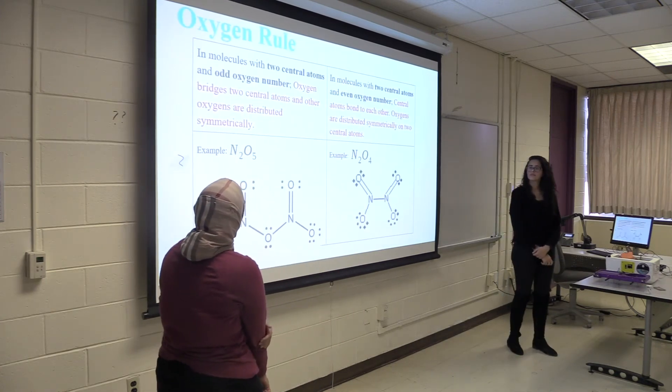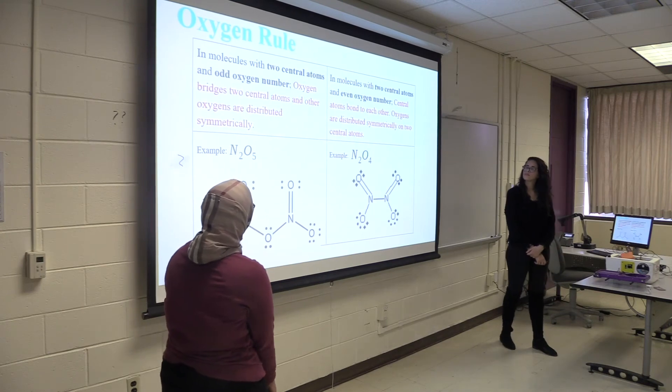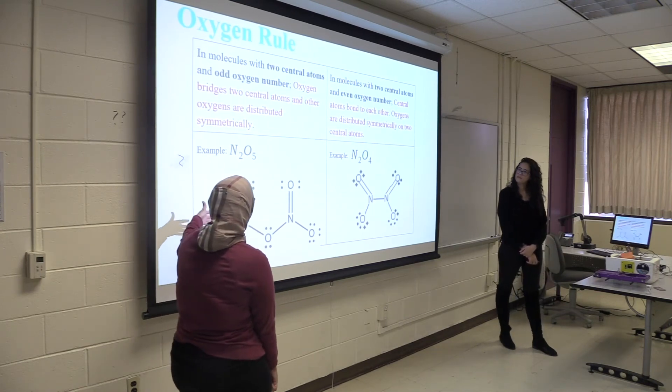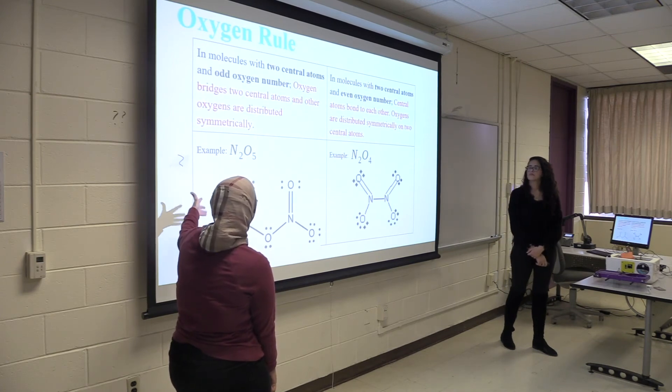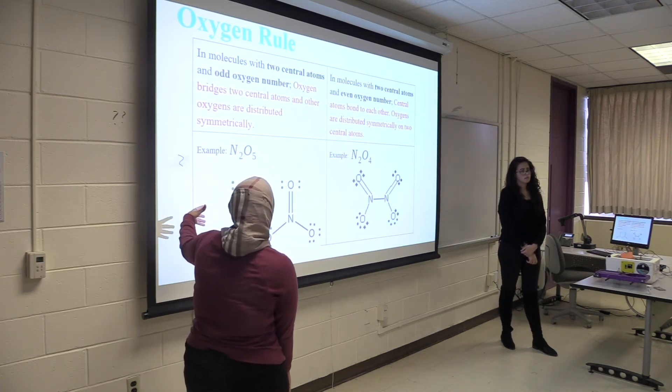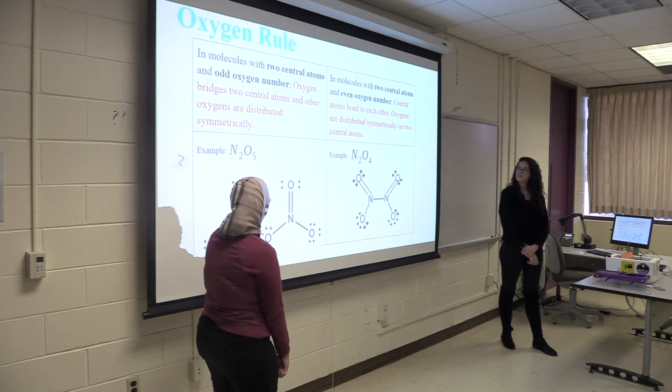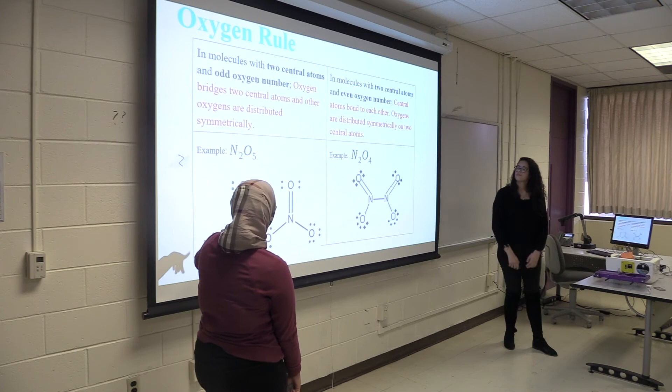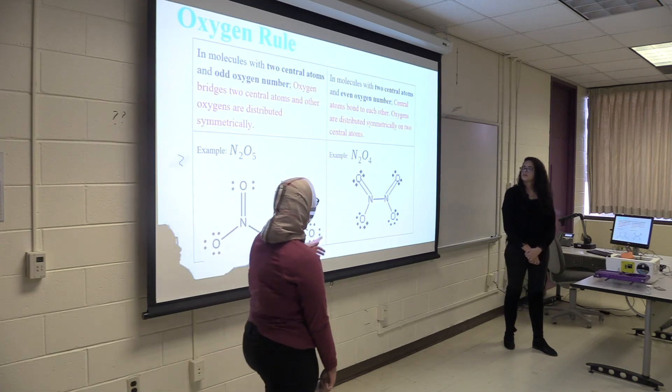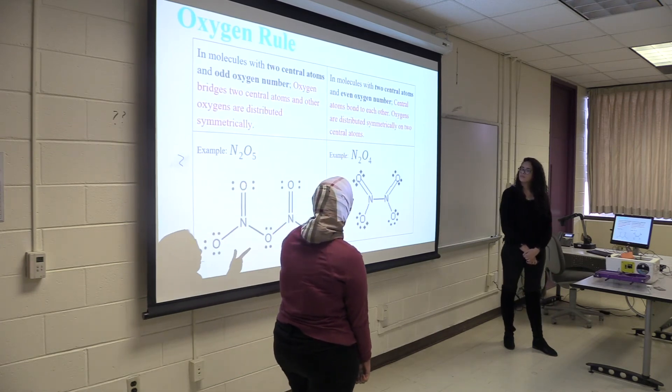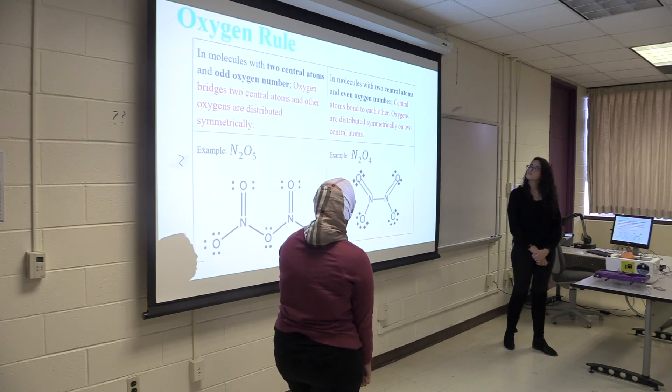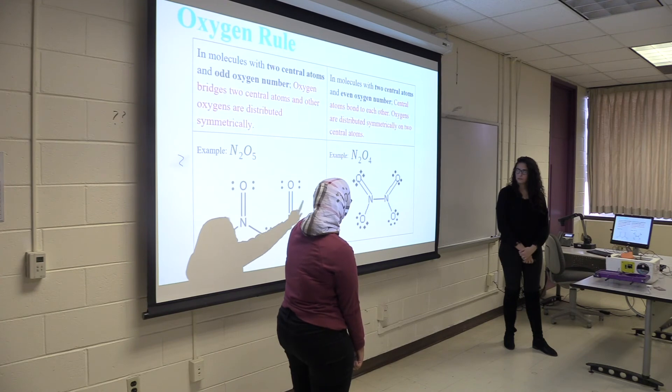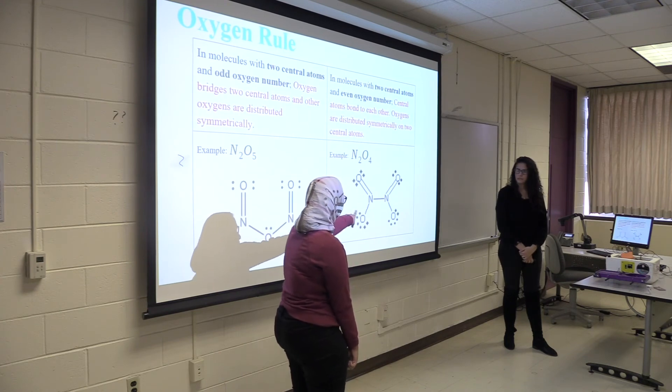And this is the oxygen rule for molecules with two central atoms. So in this example, if you have an atom with two central atoms and an odd number of oxygen, the oxygen connects the two central atoms, and the rest of the oxygen is distributed symmetrically. But if you have two central atoms and an even number of oxygen, both central atoms bond to each other, and the rest of the oxygen is distributed symmetrically.